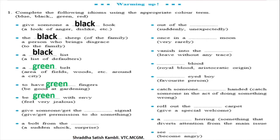'Give someone the green signal' means to give permission to do something — like in traffic when you get permission to move ahead. 'A bolt from the blue' means a sudden shock or surprise. 'Out of the blue' means suddenly and unexpectedly. 'Once in a blue moon' means very rarely. Whenever there is the word blue in these idioms, it has something to do with rarely, unexpectedly, suddenly, or surprisingly.